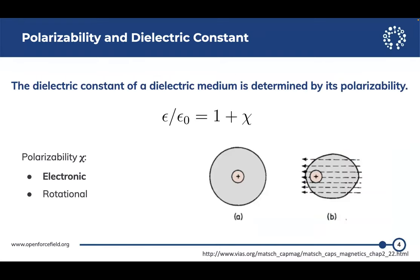When we have solvent involved in simulations, there will be an electric field around the system. When there is an electric field and every atom has polarizabilities, there will be an induced polarization effect. Those are not included explicitly in non-polarizable force fields. So with a non-polarizable force field, we're not able to get a correct dielectric constant, leading to incorrect electrostatic potential energies. In a non-polar environment, there is not much rotational polarizability involved, and we're also missing a big part of the electronic polarizability.